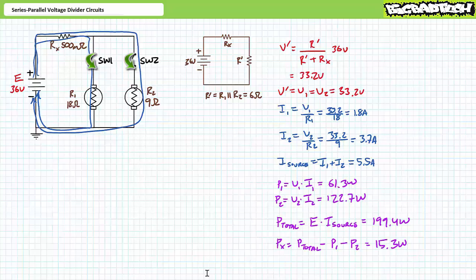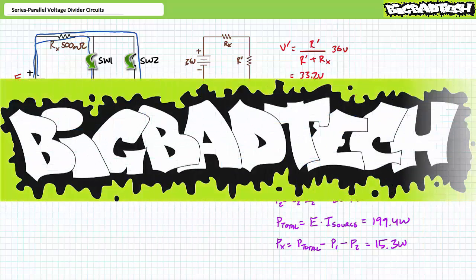That's about it for today. In conclusion, this lecture took a look at series parallel voltage divider circuits in both the unloaded and the loaded condition. We learned that values obtained during circuit analysis of the unloaded condition cannot be used to calculate values during the loaded condition, because they represent radically different circuits and must be approached as such. Remember to review these concepts as often as you need to really drive it home. Thank you very much for your attention and interest. Be sure to check out the Big Bad Tech channel for additional resources and updates.